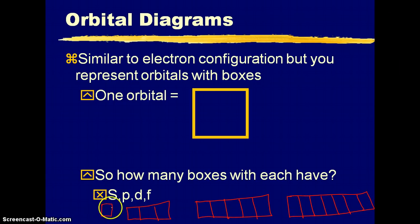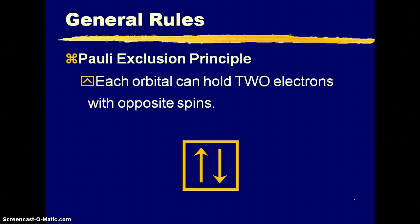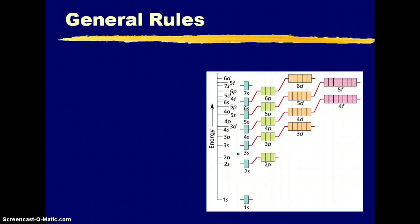So those are s, p, d, and f boxes. So now we're just drawing it out. We're going to make sure that we indicate our electrons with arrows, so the arrow is the electron. Each box can only get two electrons, and the electrons have opposite spins. So one spins up, the other spins down. So we have to make sure that we indicate that as well.